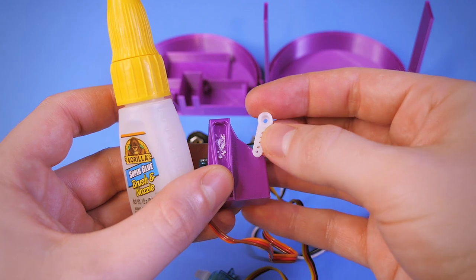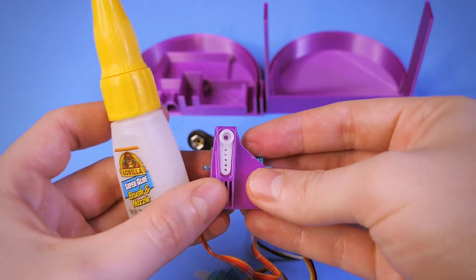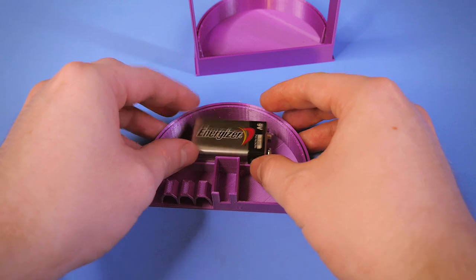I want these servo arms to be very rigid, so I'll super glue them in place. The battery will also act as a weight to hold the print down.